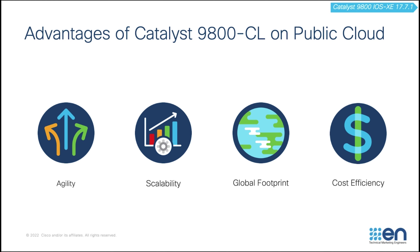In the aspect of agility, it only takes a few minutes to spawn a Catalyst 1900 CL instance in Azure, making it easy to quickly launch one or more wireless controllers and terminate when done. In the aspect of scalability, there are no physical limits in the public cloud, so new instances can be added as the requirements for additional APs and clients increase.